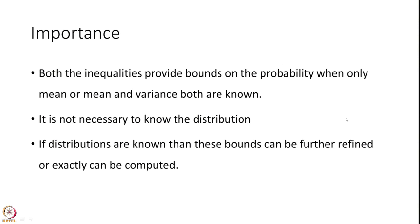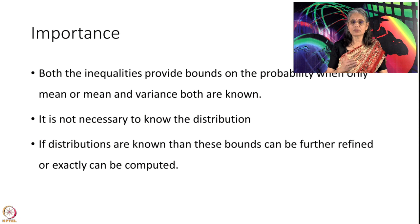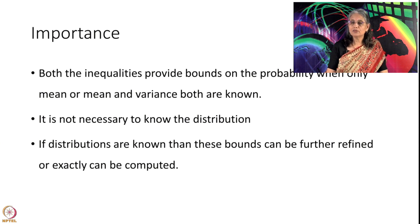Both these inequalities provide a bound on the probability when only the mean, or mean and variance, are known for any random variable. In Markov's case it applies only to a positive random variable; in Chebyshev's inequality we do not put such a restriction. Please note that no distributional assumptions have been made. But if you know the distribution, these bounds can be further refined and exactly computed.